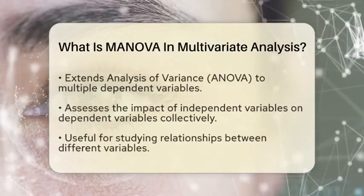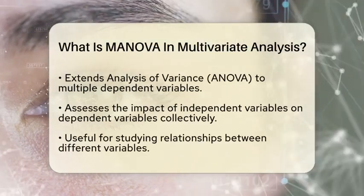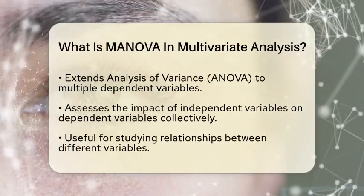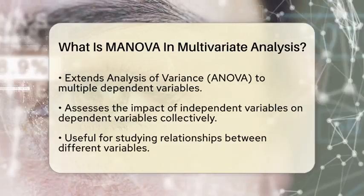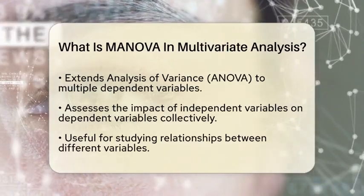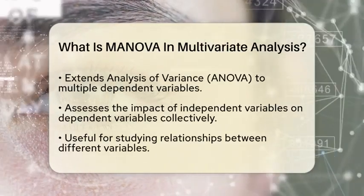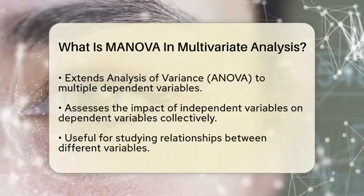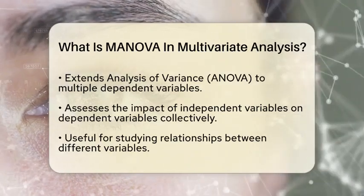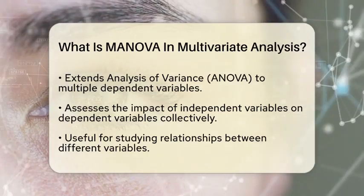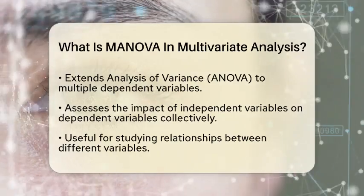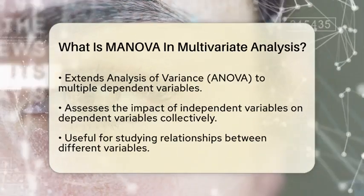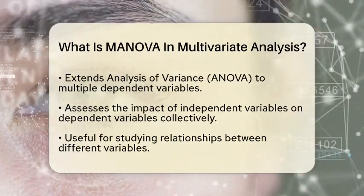MANOVA is a method used when researchers want to compare the means of multiple groups across multiple dependent variables. It extends the concept of analysis of variance, which is typically used for one dependent variable, to situations where there are two or more dependent variables. This allows researchers to assess whether the independent variables have a statistically significant effect on the combination of dependent variables.